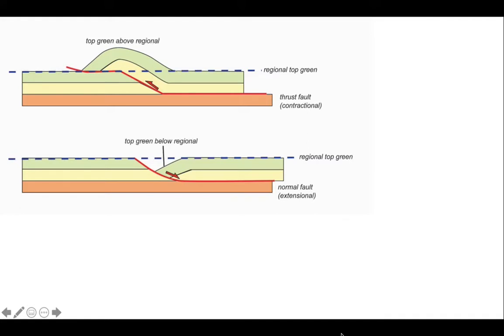So in deducing the structures, we want to look at the relationship of a horizon to where we think it should be if that local structure hadn't developed.